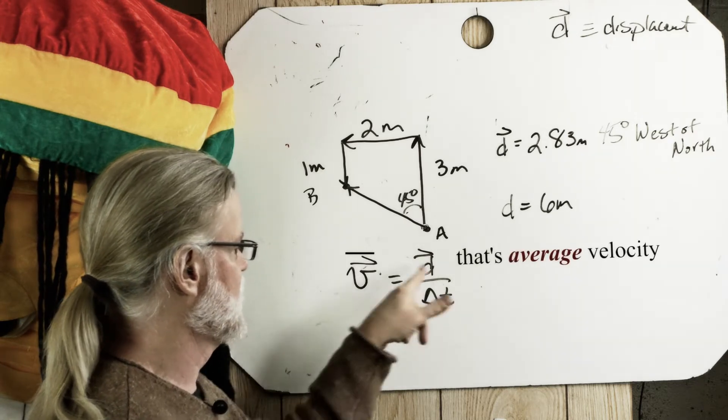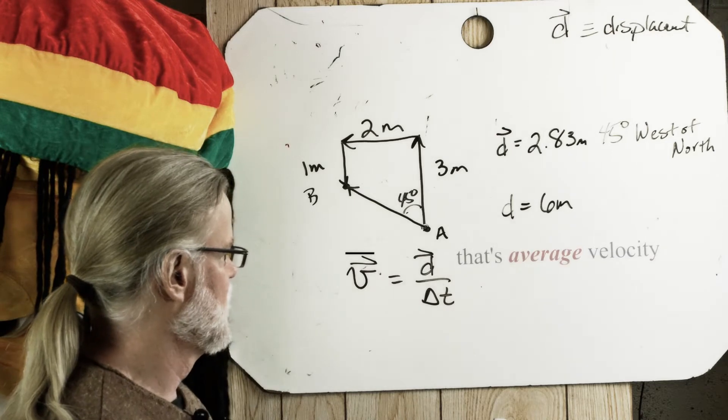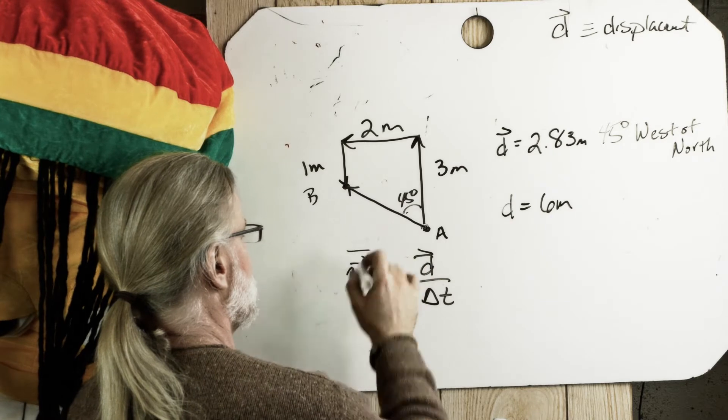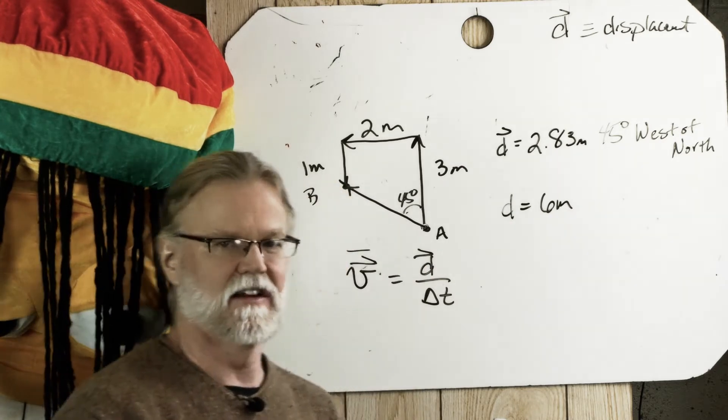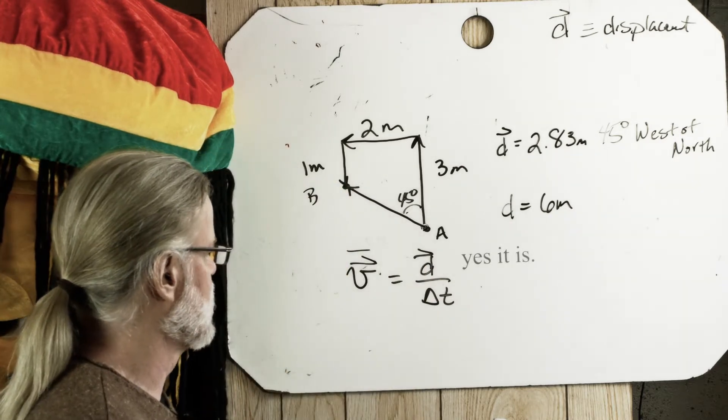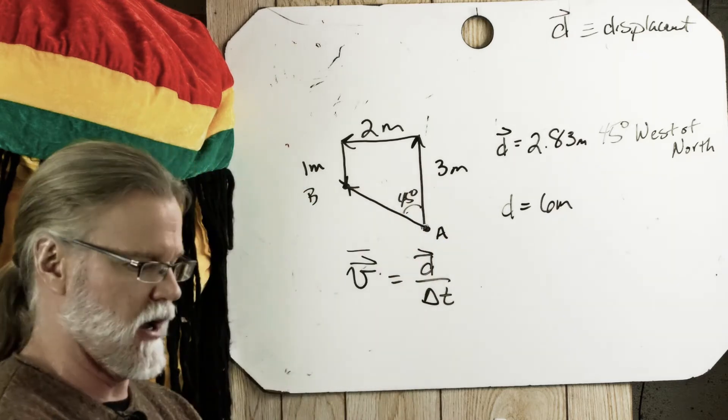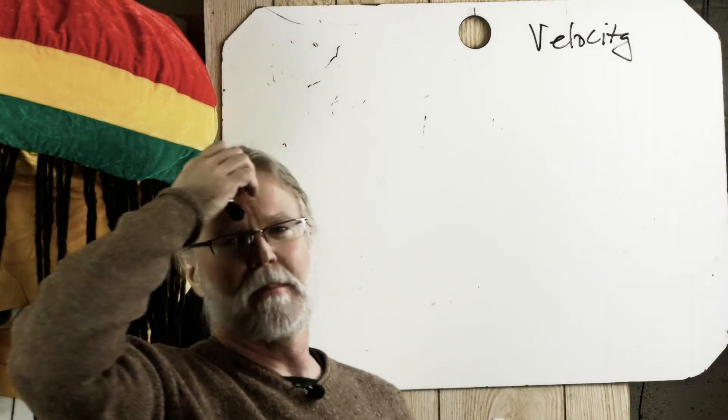And of course, the velocity is in the direction of the displacement. And actually, this is the average velocity is displacement divided by time. Why don't we do some, why don't we try a vector problem with velocity? Why don't we get back to Sally?